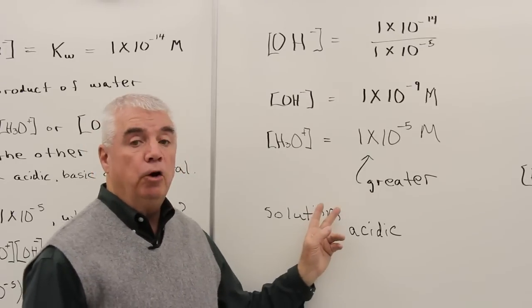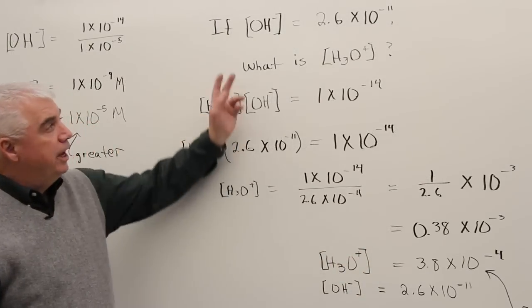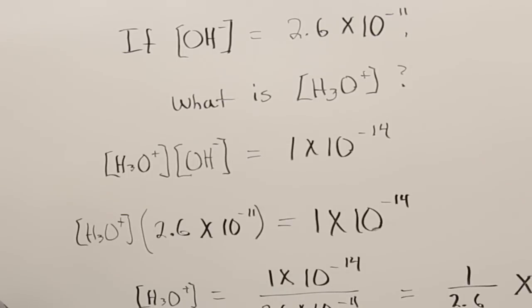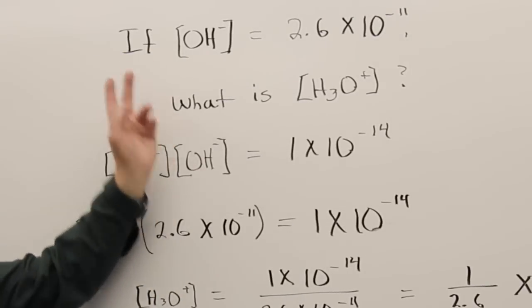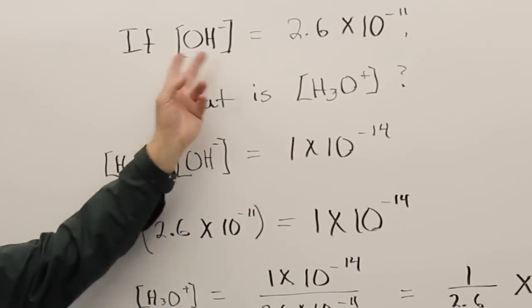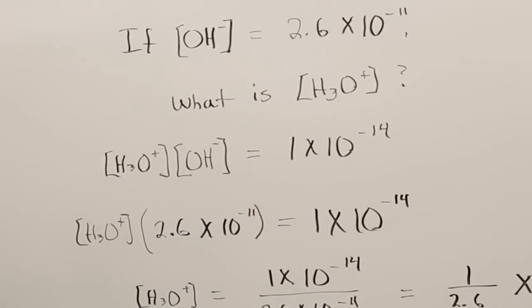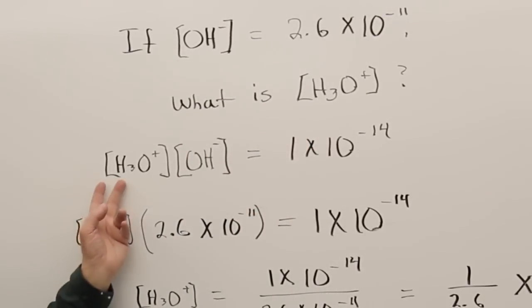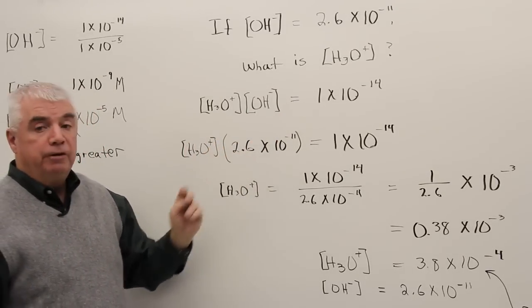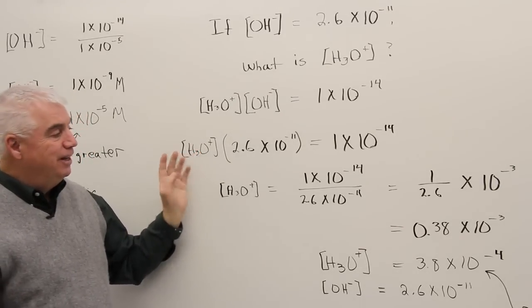Let's look at a little bit harder problem. In this case, we've got a number that isn't 1. We've got 2.6 times 10 to the minus 11th. And the question is, what's the H3O+ concentration if that is the OH- concentration? Here's our ion product of water. We'd substitute in for the OH-. The objective again, get all the numbers on the right-hand side, the unknown on the left-hand side.